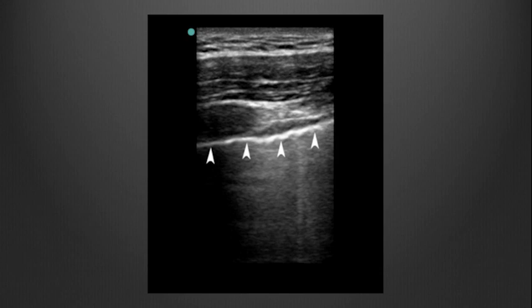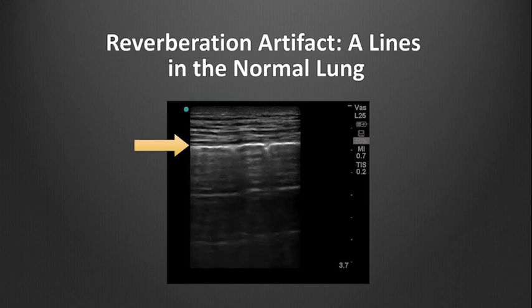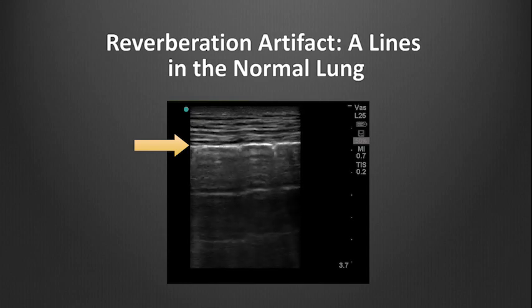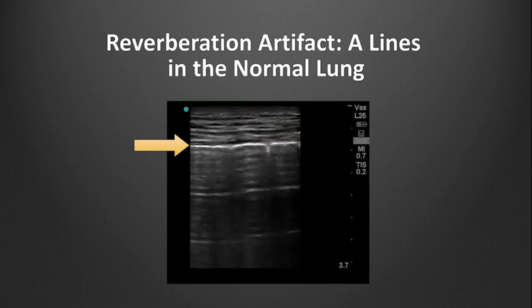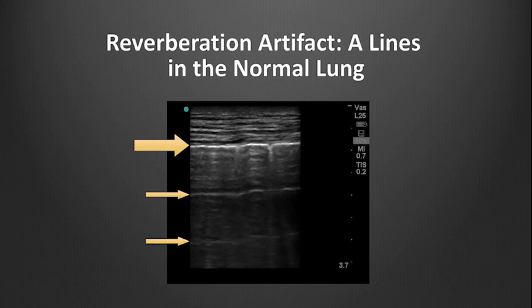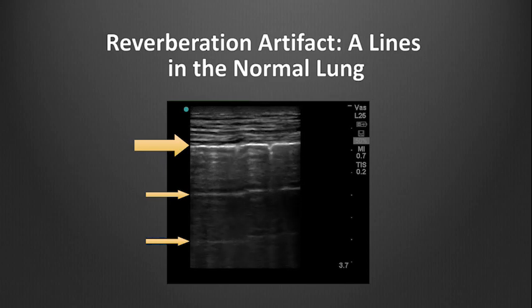The soft tissue above the pleural line is nicely detailed on the image, but the air in the lung scatters the beams, causing the picture deep to the pleural line to appear gray and grainy. The normal pleura is a dense structure that does not allow the ultrasound beams to penetrate well, resulting in reverberation artifact as the beams bounce back and forth between the pleura and the lung. The pleura is seen as a hyperdense white line, shown by the thick arrow, and the reverberation artifacts that occur in the normal lung are called A-lines, shown by the thin arrows. Each of these white lines is a replica of the pleural line occurring at equally spaced intervals, but does not actually exist in the patient's body. A-lines are an example of an artifact that occurs in normal tissues.